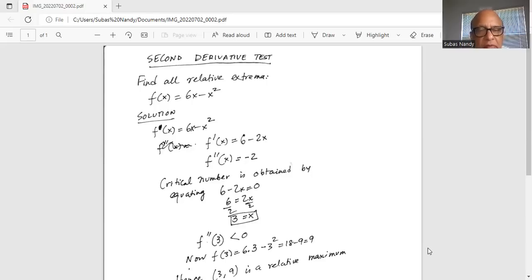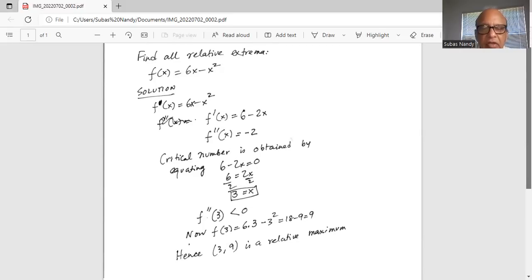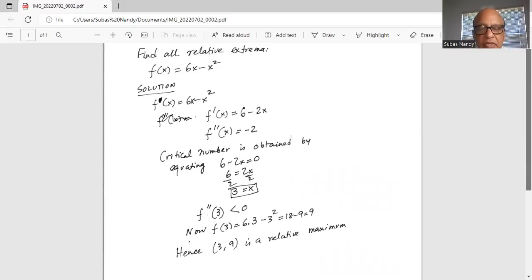Now f double prime 3 is equal to minus 2, which is less than 0. And when x is 3, f(x) is 6 times 3 minus 3 squared, which is 18 minus 9, equal to 9.